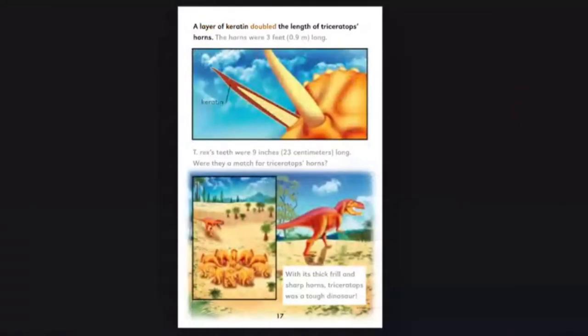The Triceratops formed a circle to protect their young. They pointed their sharp horns at T-Rex. A layer of keratin doubled the length of Triceratops' horns. The horns were 3 feet, 0.9 meters long. T-Rex's teeth were 9 inches, 23 centimeters long. Were they a match for Triceratops' horns? With its thick frill and sharp horns, Triceratops was a tough dinosaur.